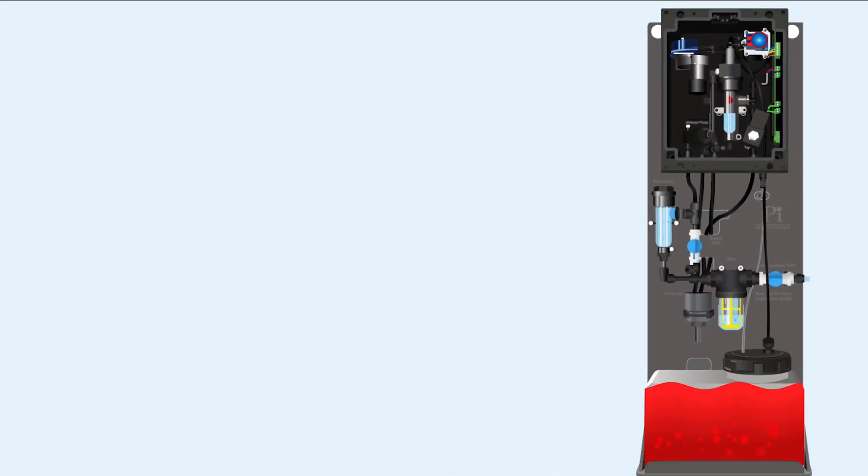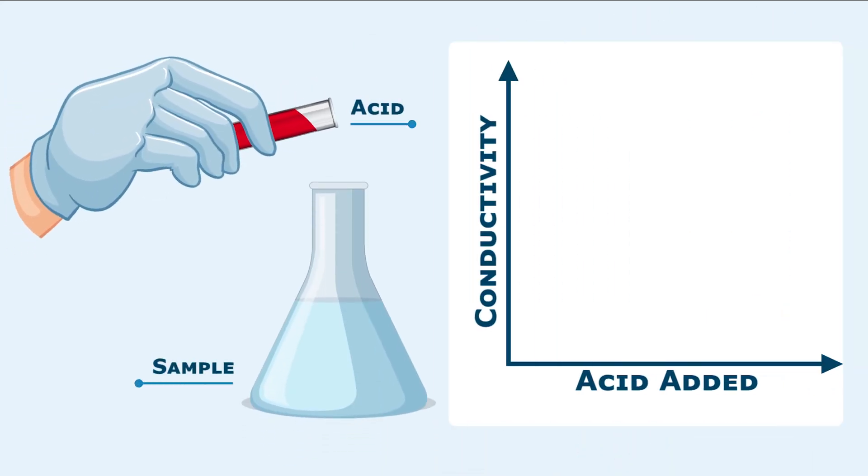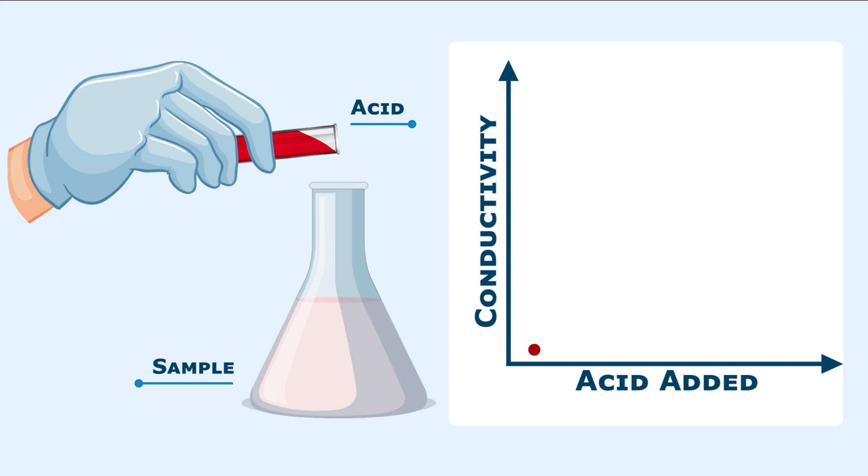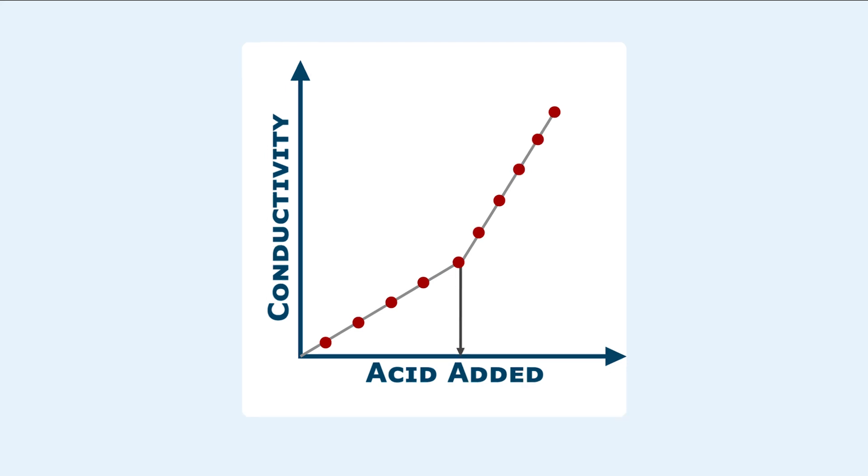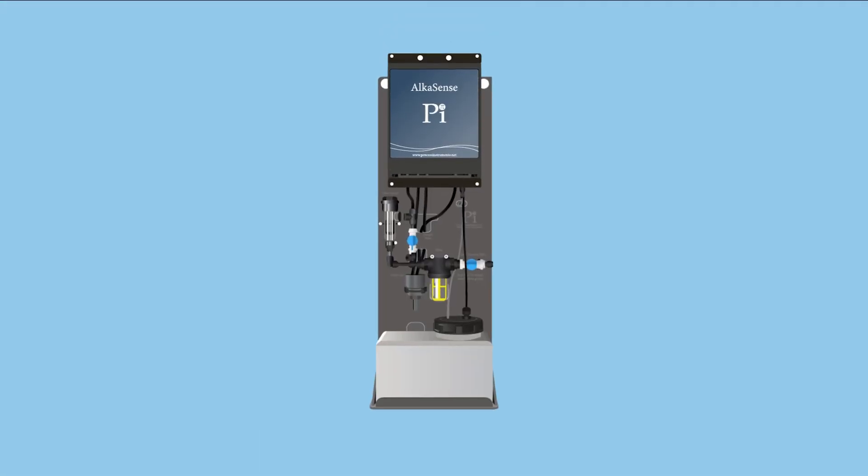By adding an acid, as the acid is added it uses up the alkalinity and changes the conductivity. Once all the alkalinity is gone, by continuing to add acid the conductivity changes but at a different rate. As AlkaSense knows the amount of acid that has been added, it can calculate the total alkalinity of the sample.